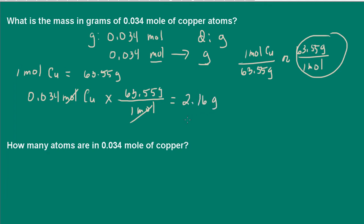We do have to take into consideration significant figures. We were given 0.034 moles, which has two significant figures. So our answer must also have two significant figures. I will round this to 2.2 grams.